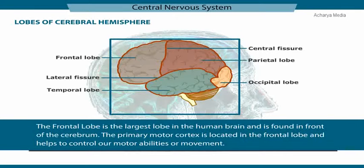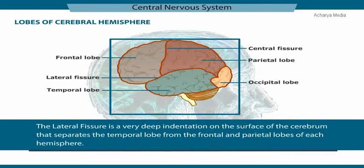The cerebral hemisphere consists of the frontal lobe, lateral fissure, temporal lobe, central fissure, parietal lobe, and occipital lobe. The lateral fissure is a very deep indentation on the surface of the cerebrum that separates the temporal lobe from the frontal and parietal lobes of each hemisphere.